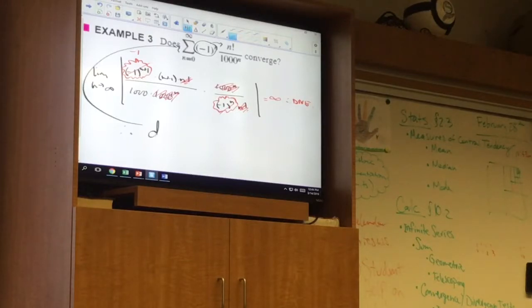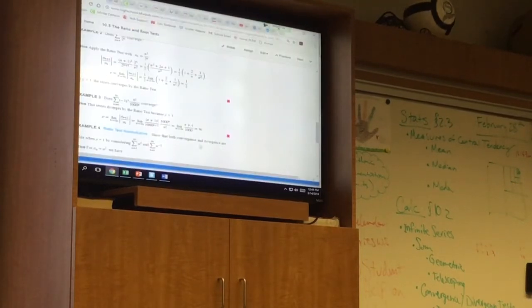Therefore, that guy diverges by the ratio test. So again, the ratio test could give convergence or it could give divergence. Or it could be inconclusive.